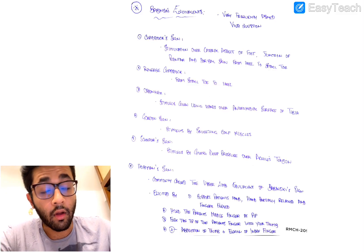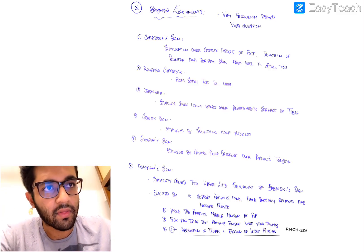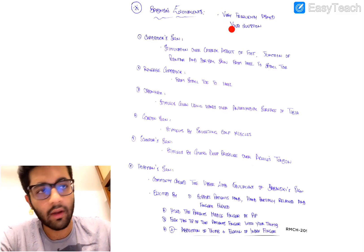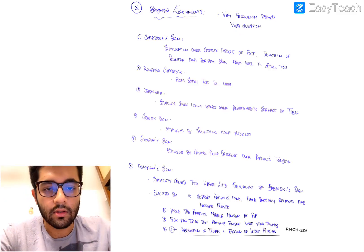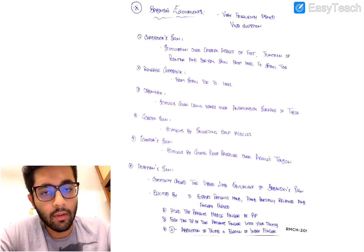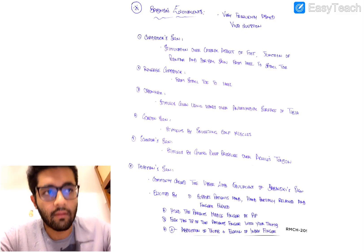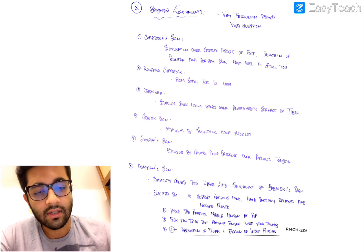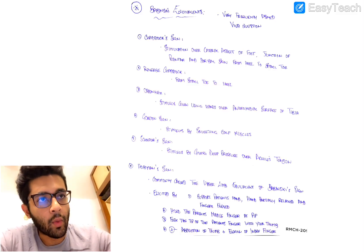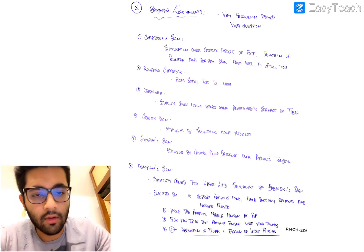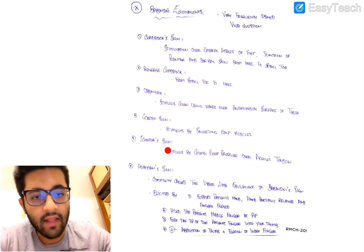This next section is the most important part of this video and a viva favorite — Babinski equivalents. These are tests done in place of, or similar to, the Babinski, performed on the lower limb and giving a similar response: upward rise of the great toe and fanning of toes. The stimulus given is different but the response is the same. You have to know the names and procedures for all of these, as there is a high probability they will be asked.